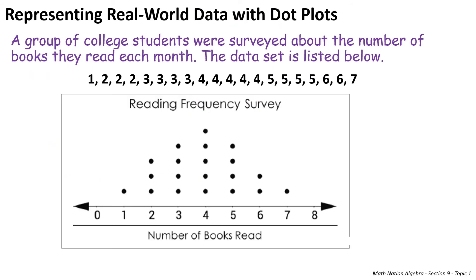Here's an example of a dot plot. A group of college students were surveyed about the number of books they read each month. For example, if we look at the number three — there are four threes in the data — so above the number three on the dot plot you place four dots. That is how you display data on a dot plot.